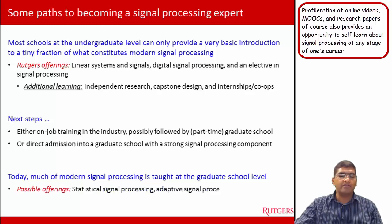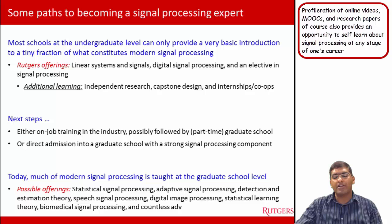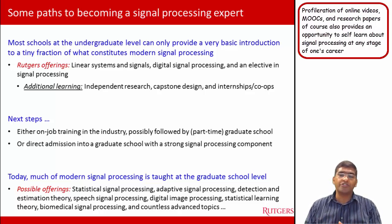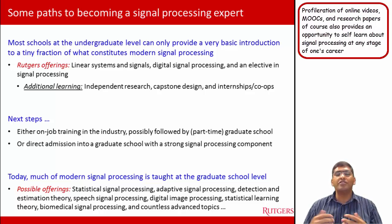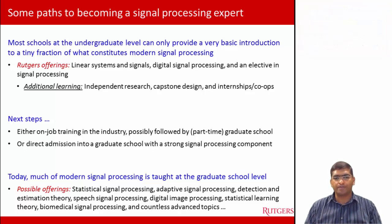At the graduate school level, there are numerous course offerings at different universities. Typical courses include statistical signal processing, adaptive signal processing, detection and estimation theory, speech signal processing, digital image processing, statistical learning theory, biomedical signal processing, and many other advanced topics depending on the faculty in that school and their research interests.